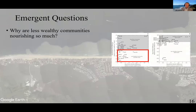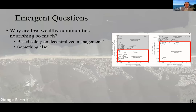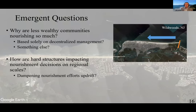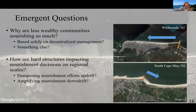Several questions emerged from this work. First, why are less wealthy communities nourishing more than wealthier communities in the field — which goes beyond the model's scope — and results in an appreciable geomorphic difference between communities? Can this be explained by non-coordination alone, or is there something else controlling this outcome? In addition, how are hard structures such as groins and jetties affecting these nourishment decisions? Do we see dampened nourishment efforts updrift of these structures due to impoundment, and amplified efforts downdrift due to sediment starvation?